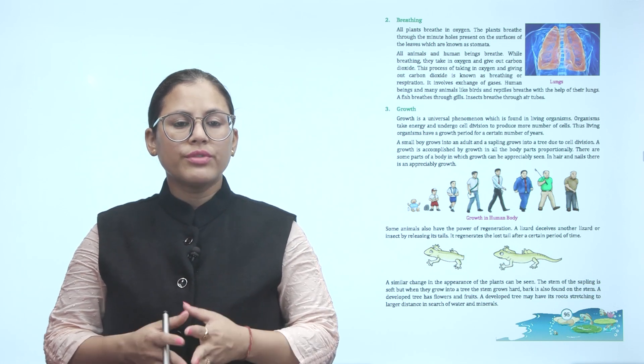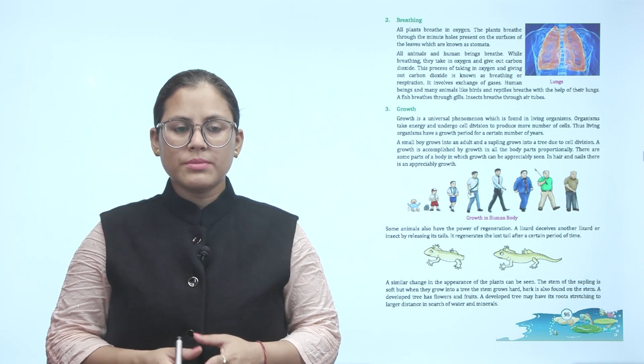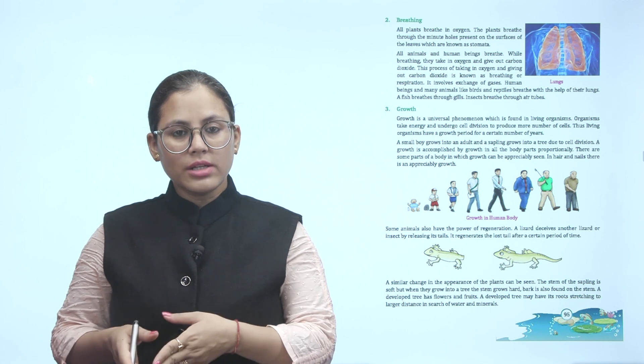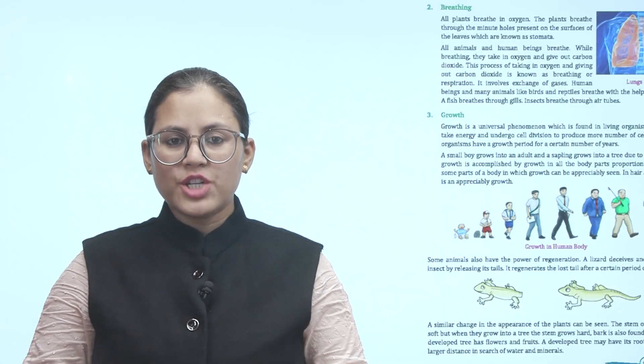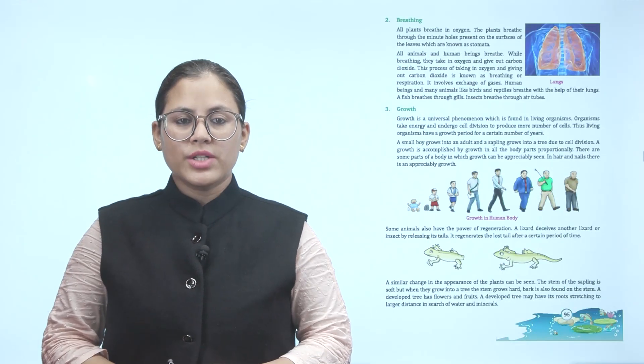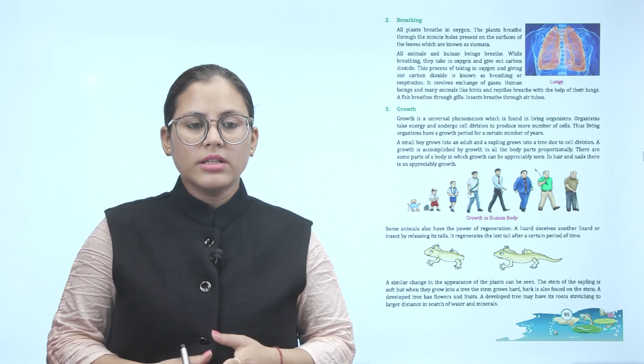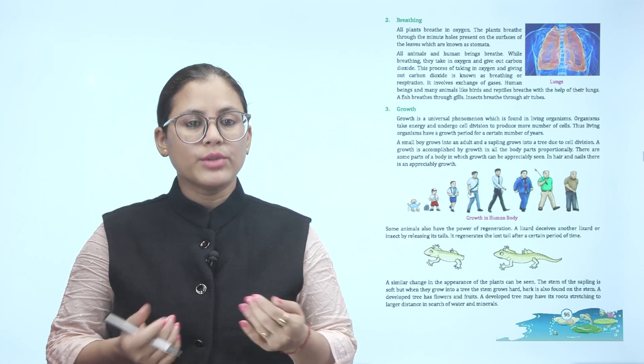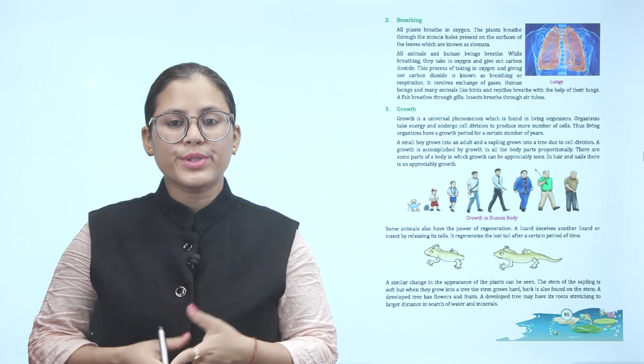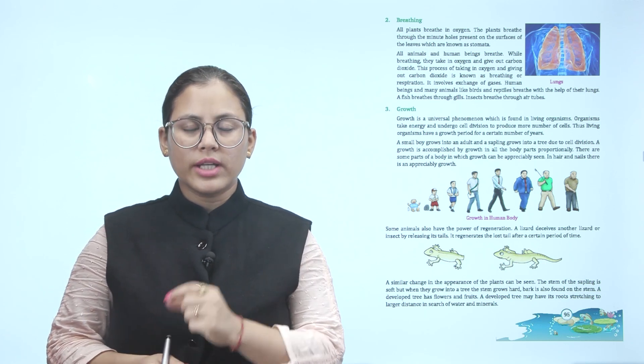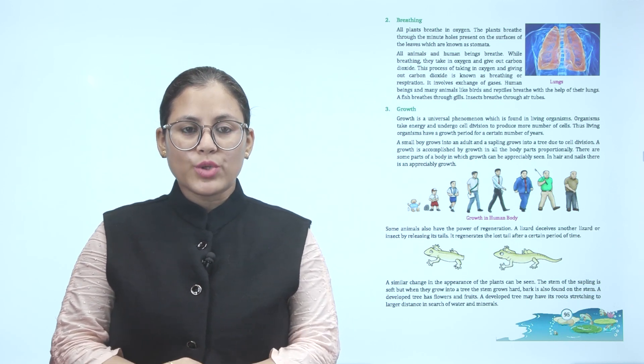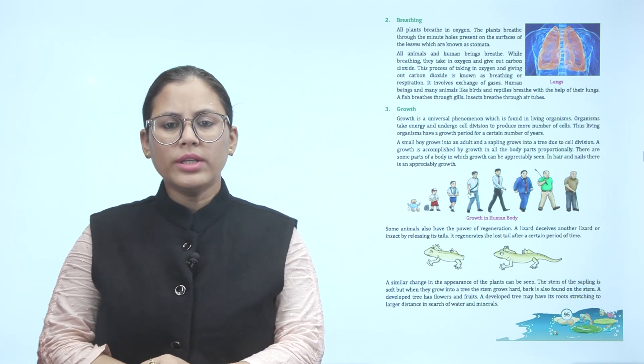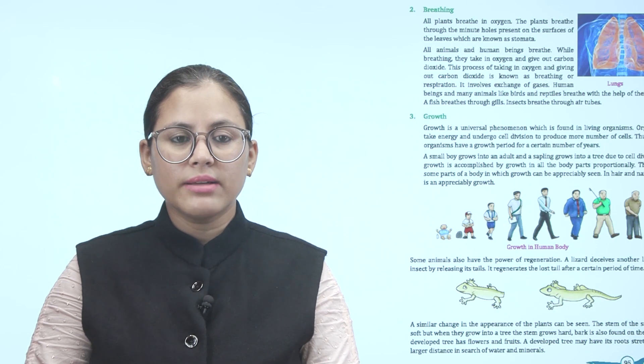Growth. Growth is a universal phenomenon which is found in living organisms. Organisms take energy and undergo cell division to produce more number of cells. Thus living organisms have a growth period for a certain number of years. A small boy grows into an adult and a sapling grows into a tree due to cell division. Growth is accomplished by growth in all the body parts proportionally. There are some parts of a body in which growth can be appreciably seen, like in hair and nails. Every organism grows. They take energy and have cell division which produces more cells. Living organisms have a growth period for a certain number of years.